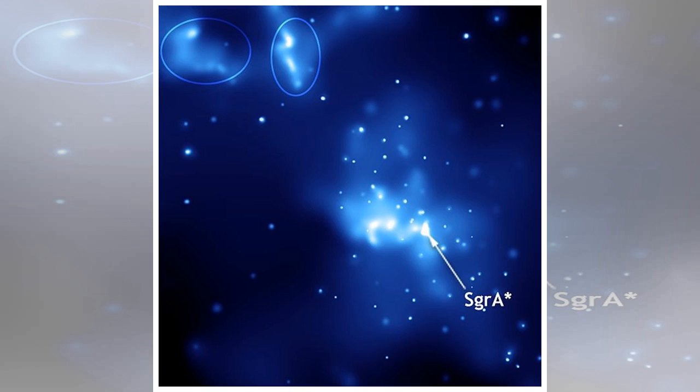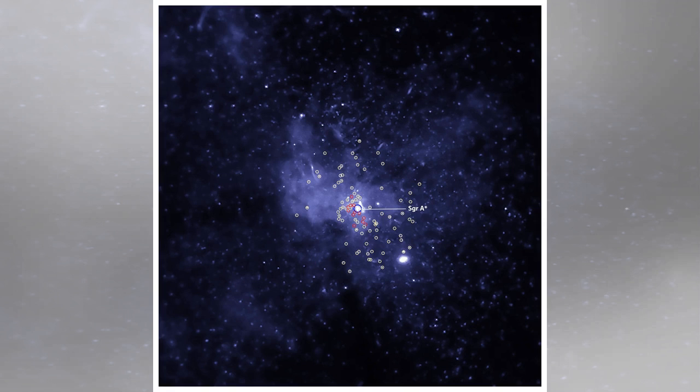A black hole by itself is invisible. However, a black hole or neutron star locked in close orbit with a star will pull gas from its companion. Astronomers call these systems X-ray binaries. This material falls into a disk and heats up to millions of degrees and produces X-rays before disappearing into the black hole.